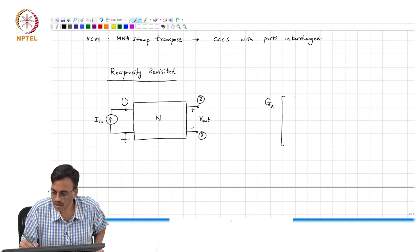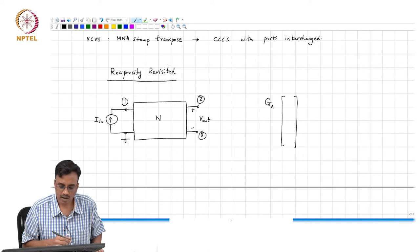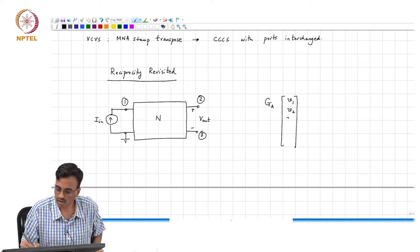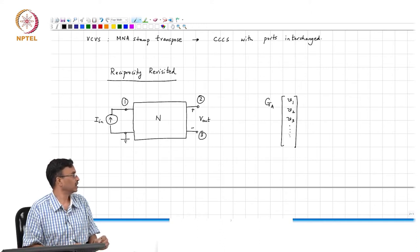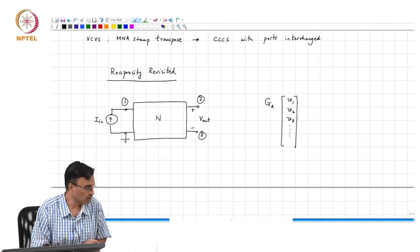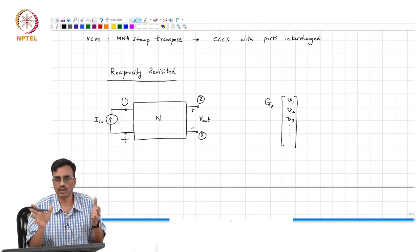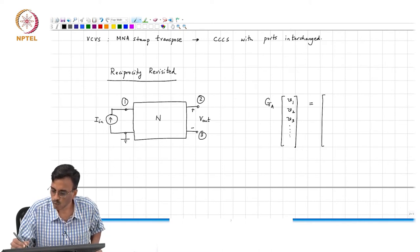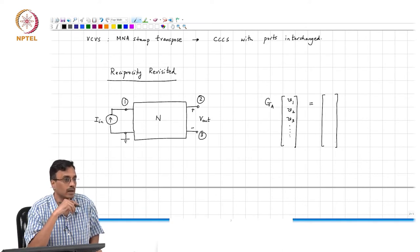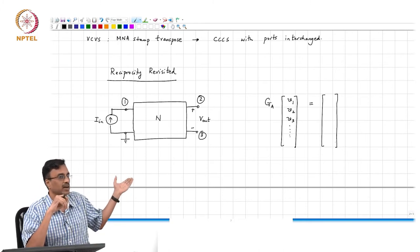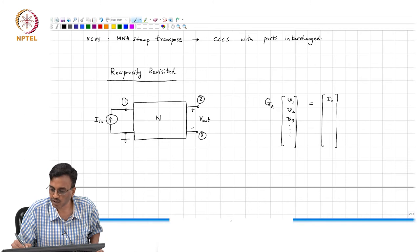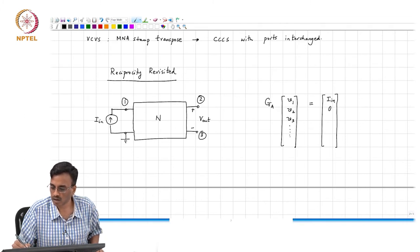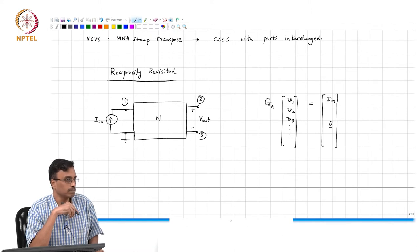So the unknowns therefore will be of this form. They will be V1, V2, V3, blah blah blah. And G_A is the augmented conductance matrix which we are now in a position to determine by simply adding up the MNA stamps of the individual elements. And this must be equal to what must be there on the right? All the independent sources. What are the independent sources here? There is only one independent source namely I_n. So basically that just goes into node 1, the rest of this vector is basically 0.